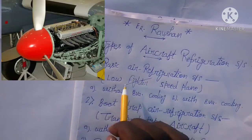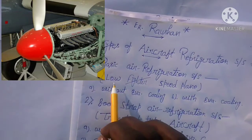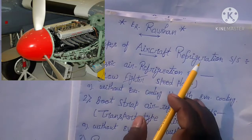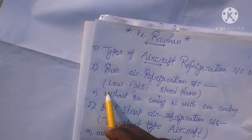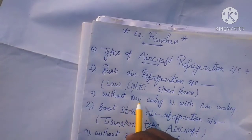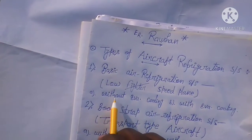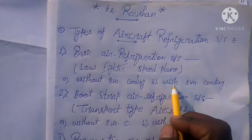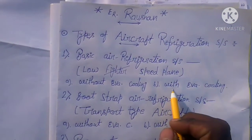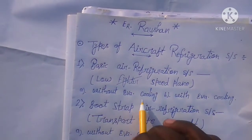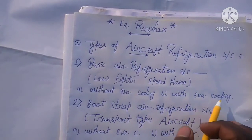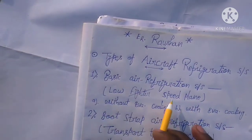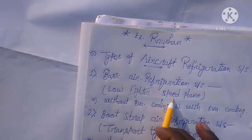First, the basic air refrigeration system. These are used in low speed planes. There are two categories: first, without evaporative cooling, and second, with evaporative cooling. So the basic air refrigeration system is used in low speed aircraft.